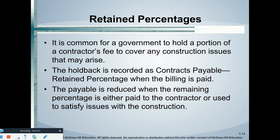Retained percentage is something fairly unique to capital projects. When dealing with long-term construction projects, whenever you get a progress billing from your contractor, you typically don't pay it in full. The typical industry norm is to pay 95% of all invoice amounts and withhold 5%. That is called retained percentage. The amount withheld is placed in a separate liability account called 'contracts payable — retained percentage.' That amount stays in that account until final sign-off of the project, specifically until we receive the certificate of occupancy and can actually use the asset being constructed.